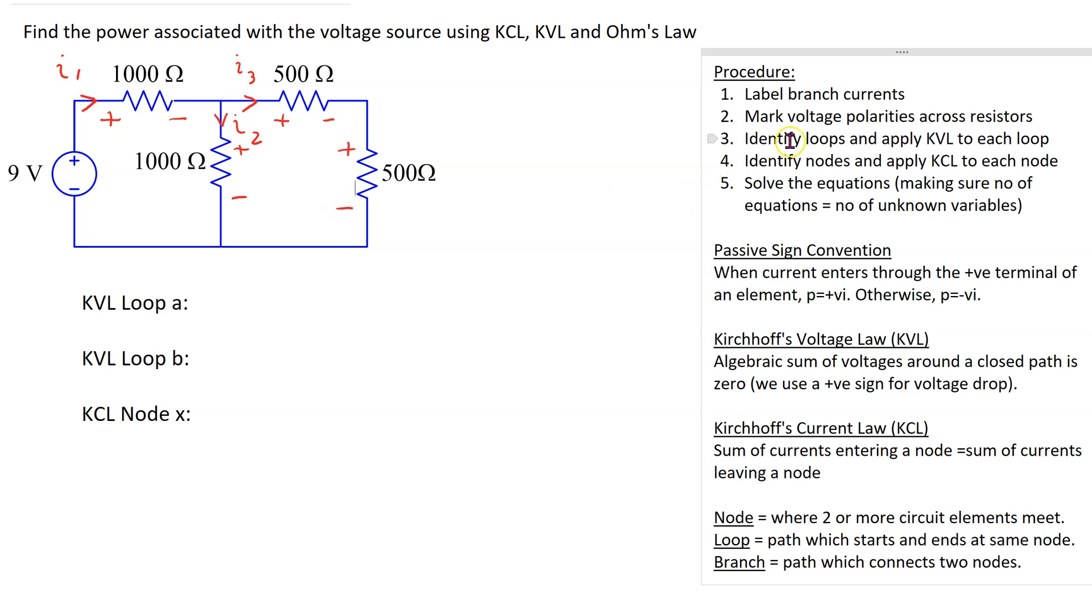The next step is to identify loops and apply KVL to each loop and also identify nodes and apply KCL to each node. In this setup we have three unknowns I1, I2 and I3. Therefore we need to have three equations in order to be able to solve for I1, I2 and I3.